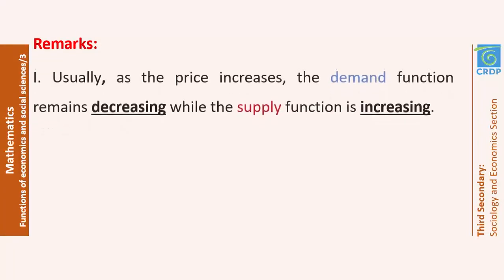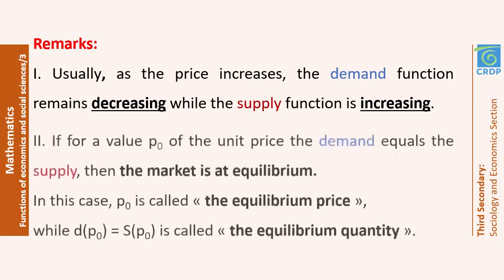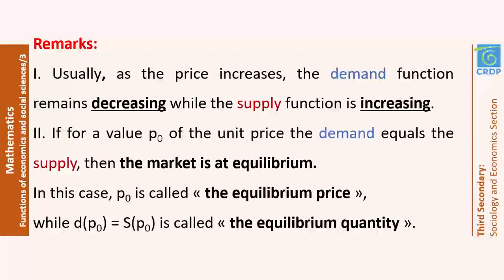Usually, as the price increases, the demand function remains decreasing while the supply function is increasing. If the price of an object increases, we will see fewer people buying this object, so the quantity remaining in the market will be more and more increasing while the demand, which is the quantity bought, will remain decreasing since fewer people are buying this product.